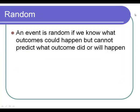An event is random if we know the outcomes that could happen, but we cannot predict what outcome did or will happen.